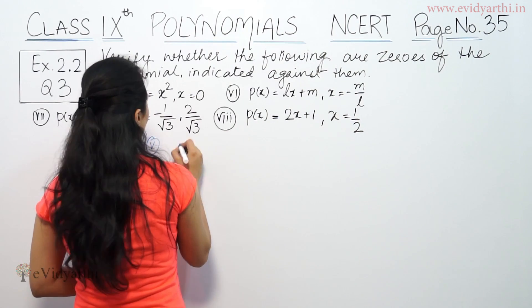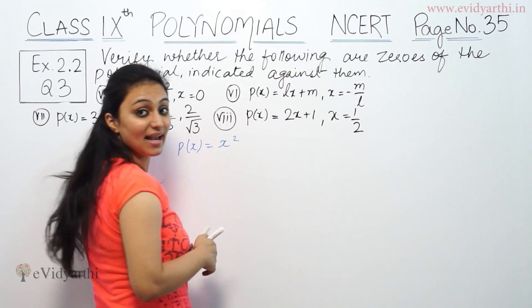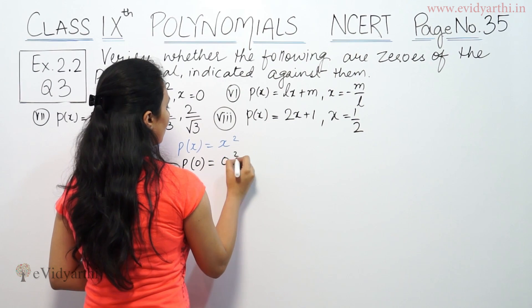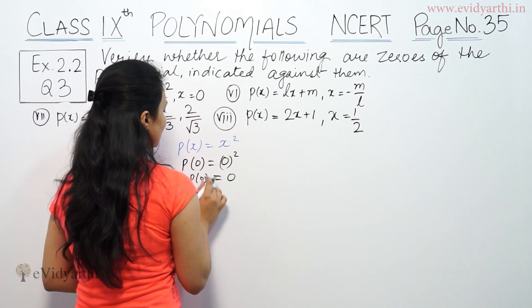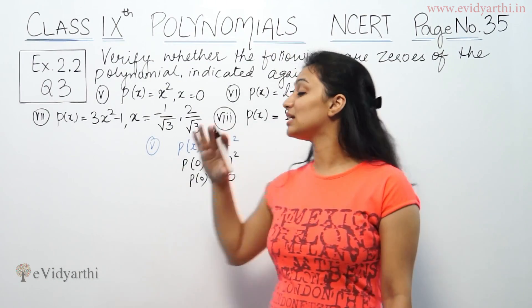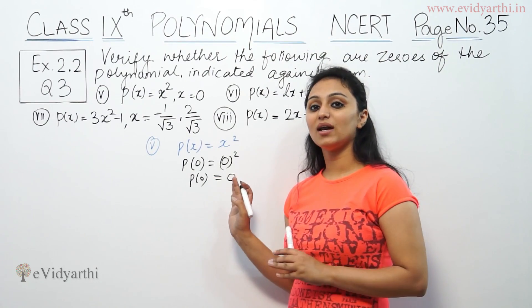The first part is P(x) = x². You have to check if x is equal to zero. So if x is zero, then P(0), let us check that if the answer is zero, then it is a zero.